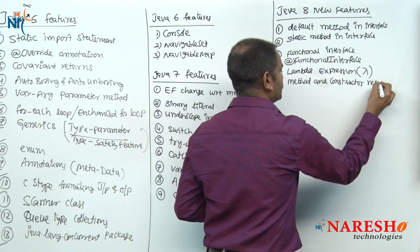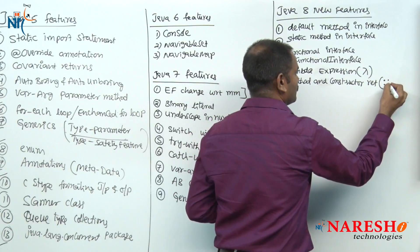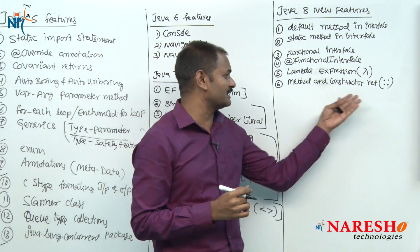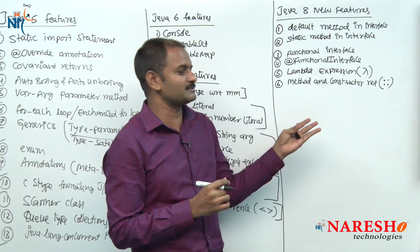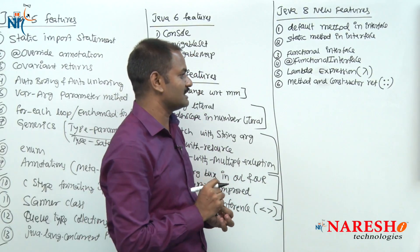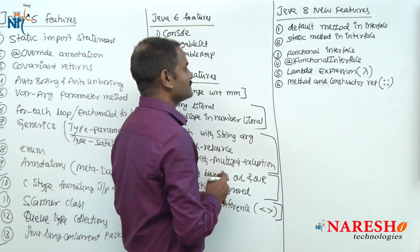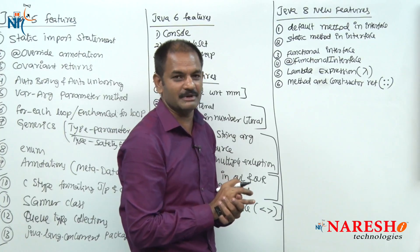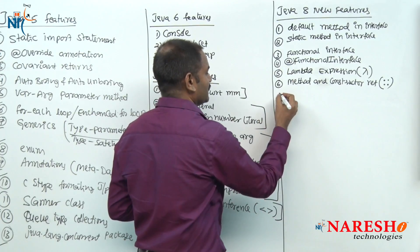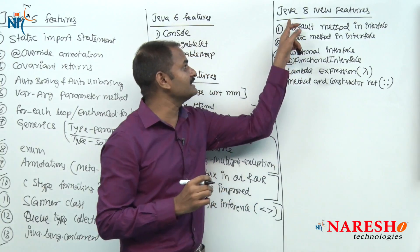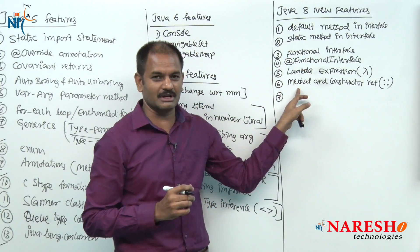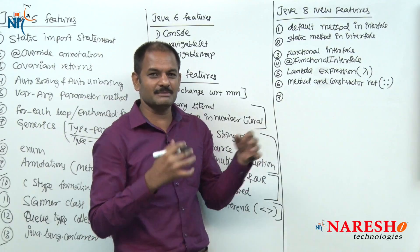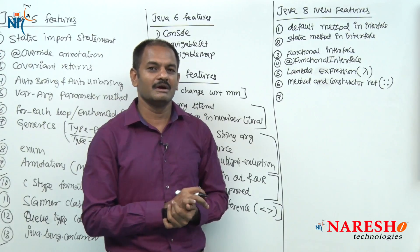Method and constructor reference come with a concept using a double-colon operator. Generally in C++ we call it the scope resolution operator, but in Java it is not a scope resolution operator — it is different. These six concepts belong to functional programming concepts. Following that, the next target is stream API — nothing but bulk operations performing on collection objects.